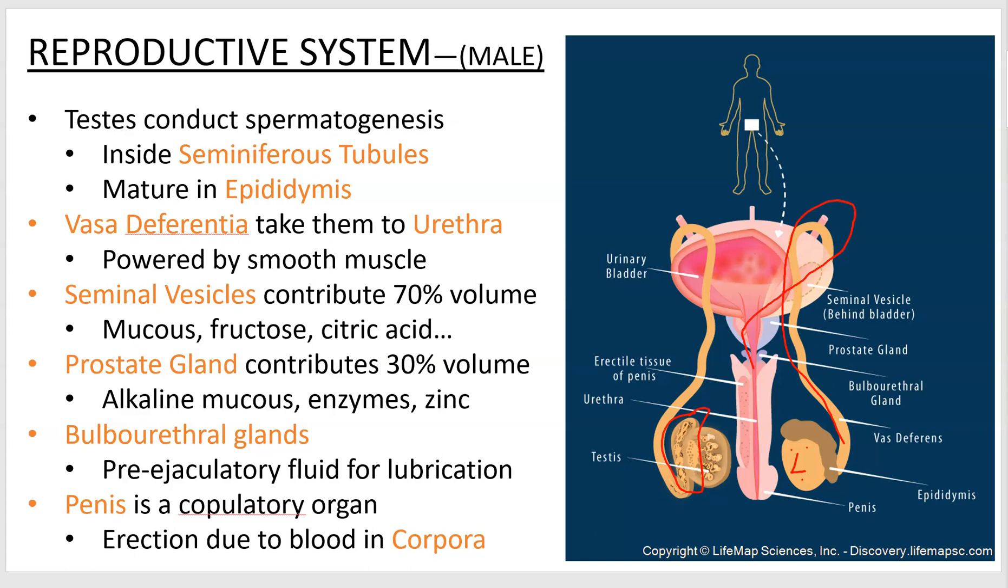The seminal vesicles are paired big glands that produce about 70% of the secretions — mucus for volume and fructose to power the sperm cells. The prostate gland produces an alkaline mucus, which is there to increase the pH of the female's reproductive system, since the female reproductive system is fairly acidic as an antibacterial effort. The bulbourethral glands are paired small structures that don't produce much volume, but they do produce a pre-ejaculatory fluid which acts as a lubricant.